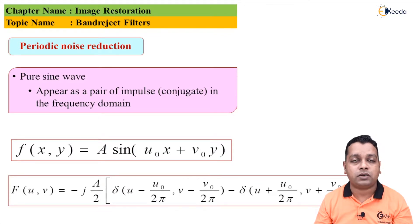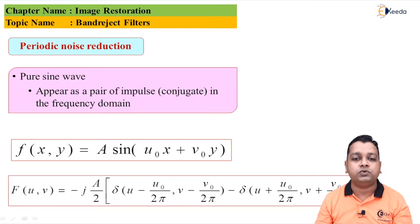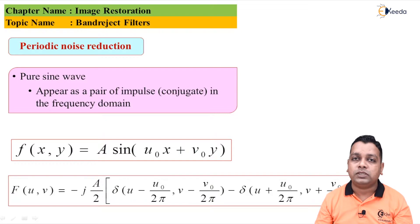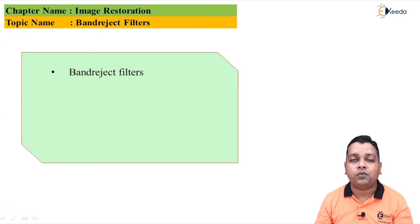When we take the Fourier transform, in the frequency representation denoted by capital F(u, v), it is computed as minus j times A over 2, in brackets containing a delta function representing the impulse for (u − u₀/2π, v − v₀/2π), minus another impulse — as we have a pair of impulses — with delta in bracket (u + u₀/2π) where v is added with v₀/2π. These are the two impulses.